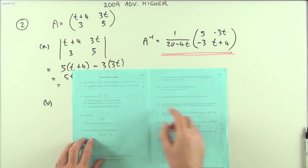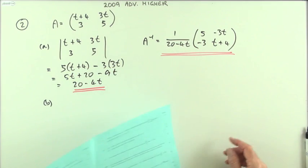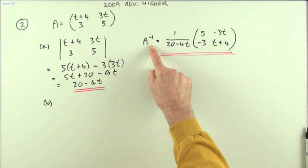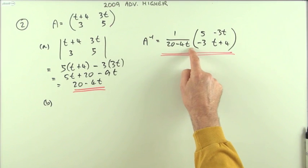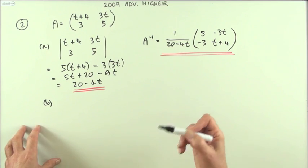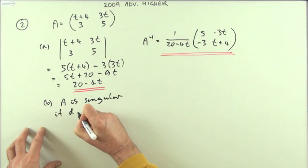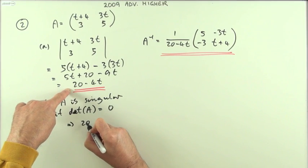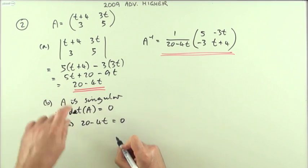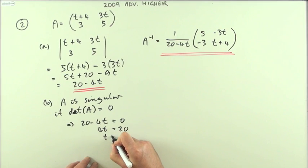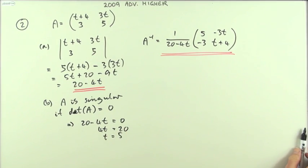Part B: write down the value of t such that A is singular. A being singular would mean it would have no inverse, and to have no inverse I'd want the denominator of this part to come to zero. So that means A is singular if the determinant of A is zero, which means that 20 minus 4t should equal zero. So 4t equals 20, so t equals 5. Wasn't a lot to that, but there was only one mark.